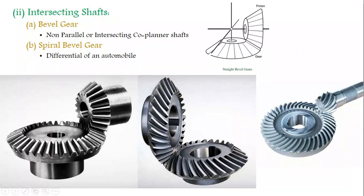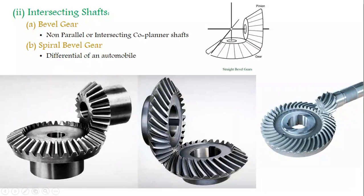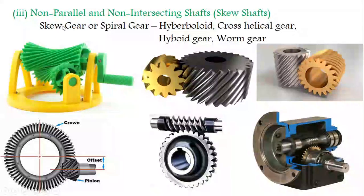The spiral bevel gear is mostly used in the transmission unit — in the differential unit in automobile engineering, which is used to transmit power from the engine through the transmission unit to the rear axle. This is the spiral bevel gear arrangement.